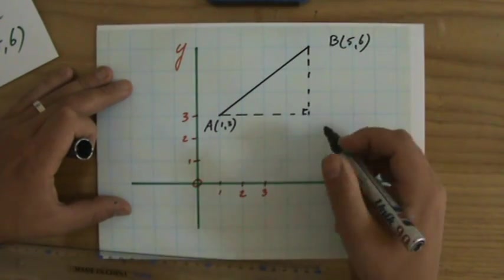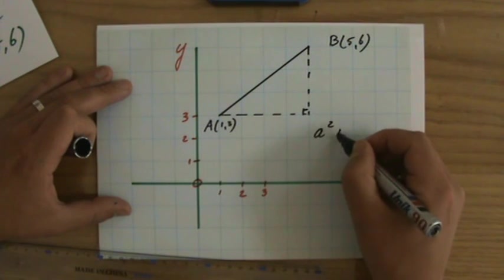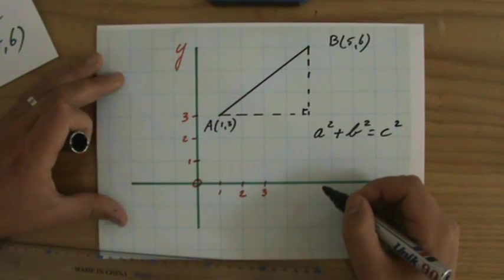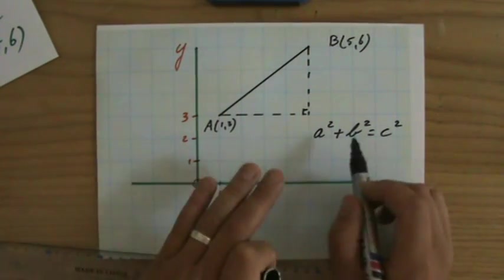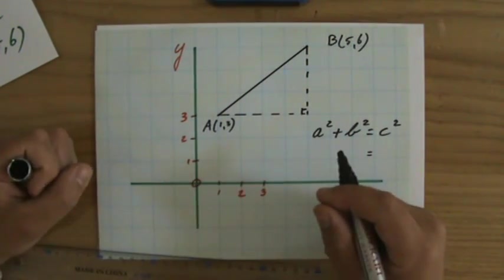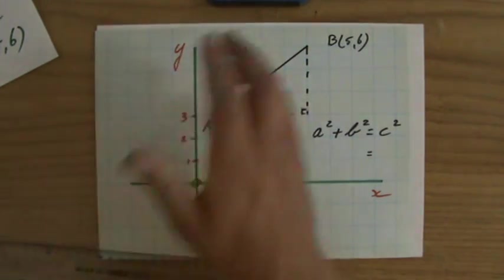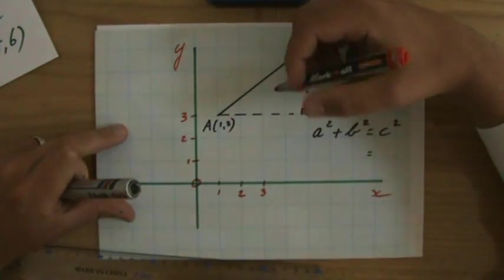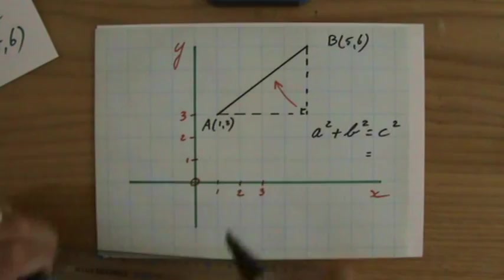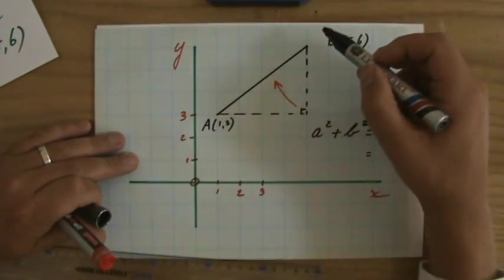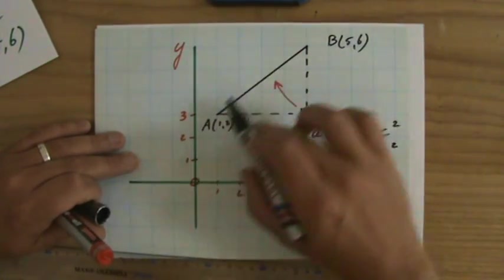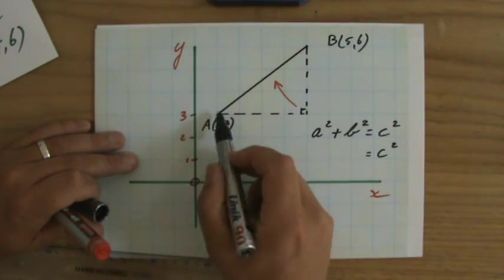And what did Pythagoras tell us? He said, if you do A to the power 2, and you add B to the power 2, you get C to the power 2. And what was important, A and B, it doesn't really matter which side you call A, which side you call B, but C, we said that is the hypotenuse. The hypotenuse was that side across the 90-degree angle. In this case, that is the length we're looking for, C squared, because that's the length of the line segment the question asked us to find.